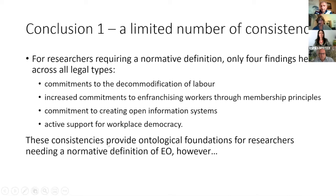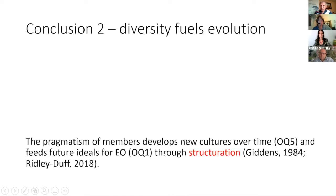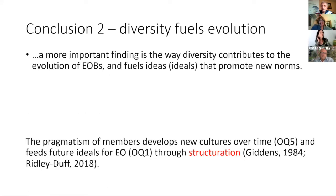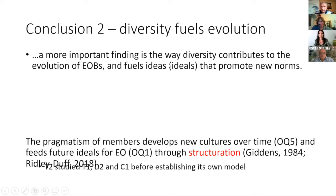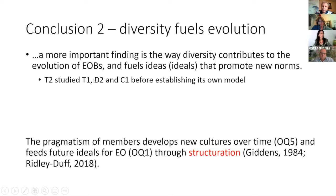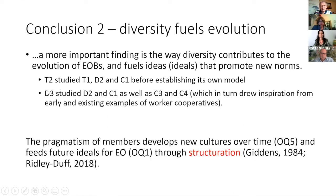That working definition might serve you for sampling. But the diversity was striking — there are different characteristics in different places. There was also interaction between different employee-owned businesses in the sample — the diversity contributes to their evolution. For example, T2 studied T1, D1, and a co-op before deciding how to set itself up. One of the direct models studied other direct models and the co-op model, which in turn drew from early examples of the worker cooperative movement.